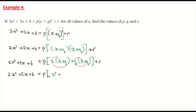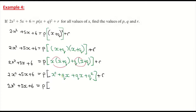x times x gives x²; q times x can be written as qx. In the second bracket, q times x also gives qx, and q times q gives q². Don't forget to add r at the end. So we have 2x² + 5x + 6 equals p times (x² + qx + qx + q²) plus r. Grouping the qx terms: qx + qx = 2qx, giving x² + 2qx + q².